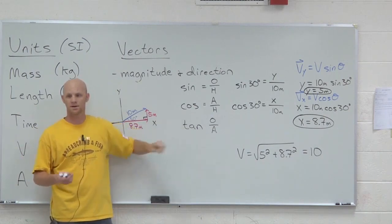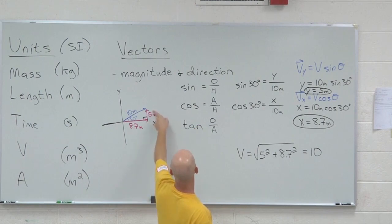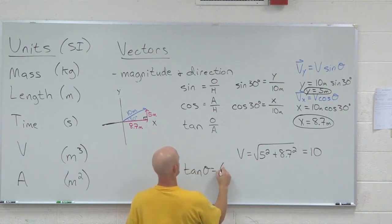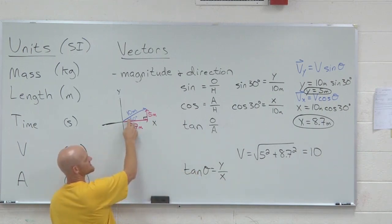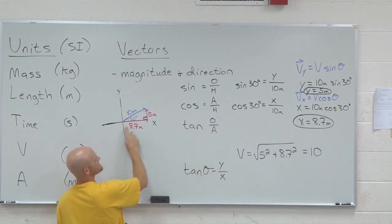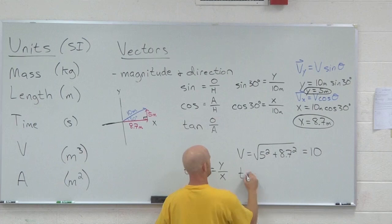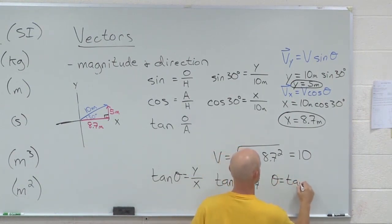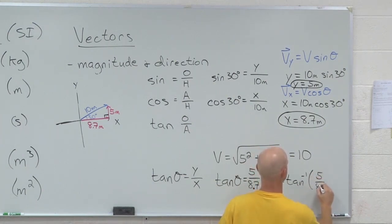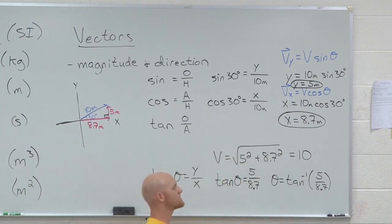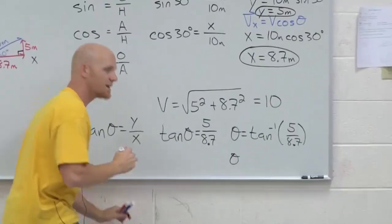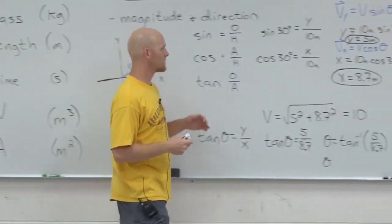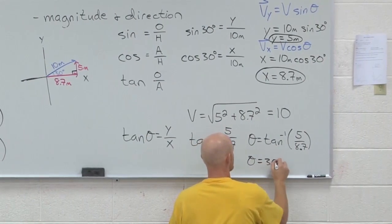If only the x and y components were given, how would we get the 30 degrees? That's what we'd use the inverse tangent for. The tangent deals with opposite and adjacent. If you always define theta with respect to the x-axis, then the opposite side is the y-component and the adjacent side is the x-component. So tangent theta equals y over x. Here, tangent theta equals 5 over 8.7, and theta equals the inverse tangent of that — which comes out to about 29.9, or roughly 30 degrees.